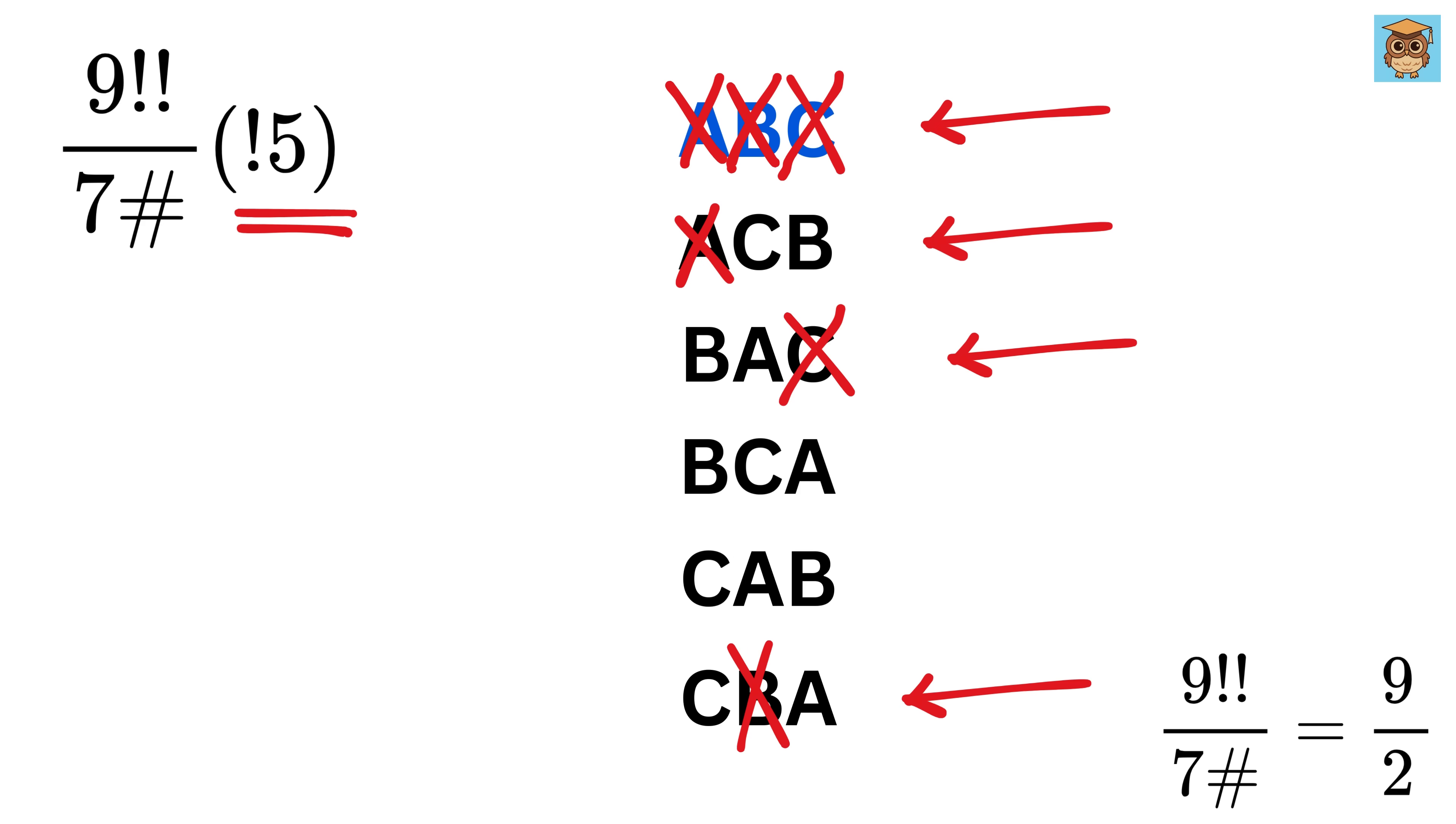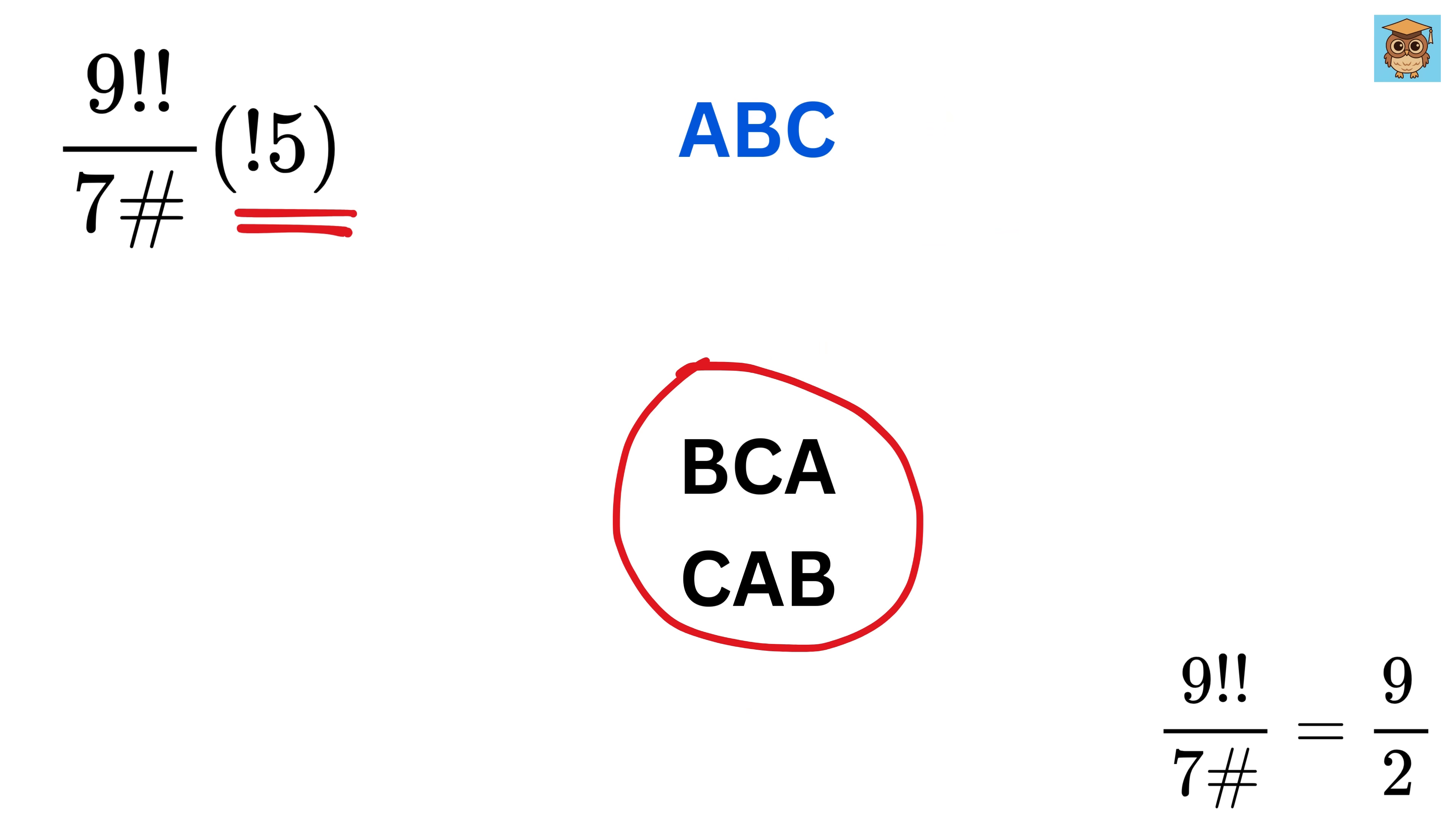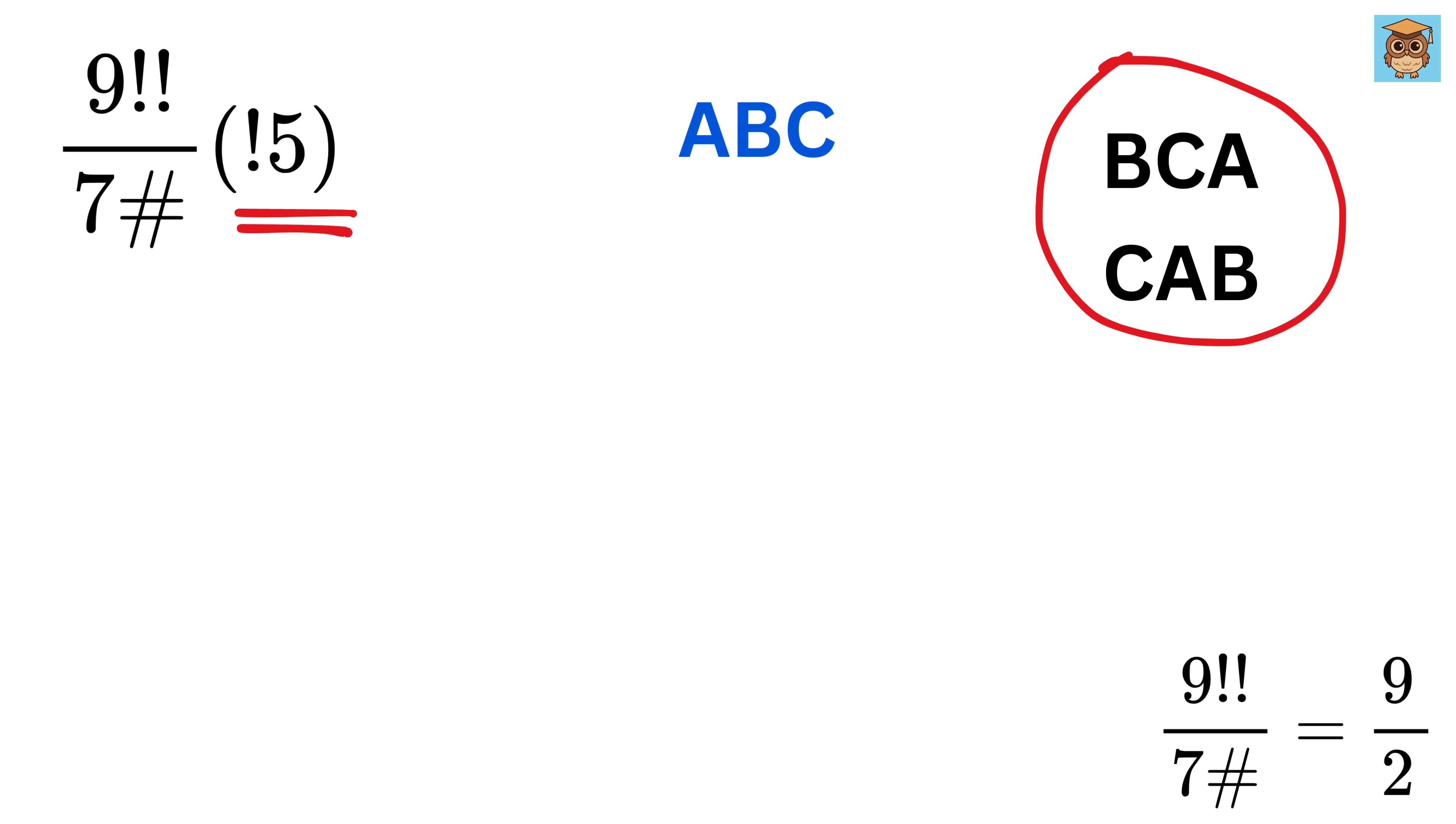So, these 4 arrangements do not count in case of sub-factorial, because now, none of them are in their original position when compared with this initial arrangement. This is the way to calculate a sub-factorial.